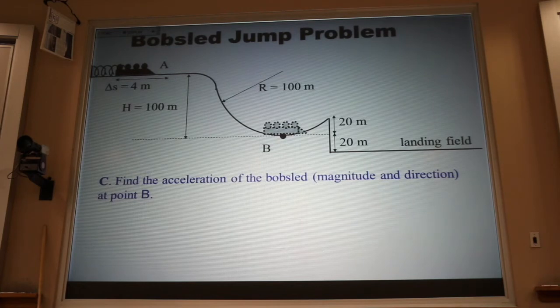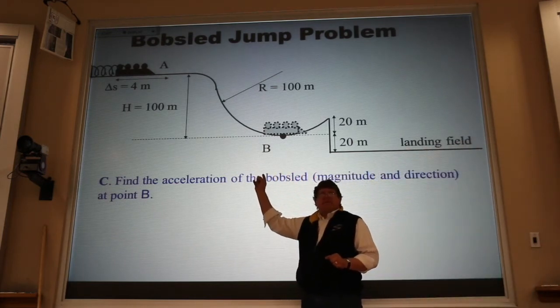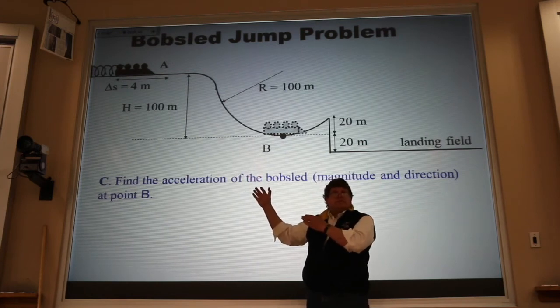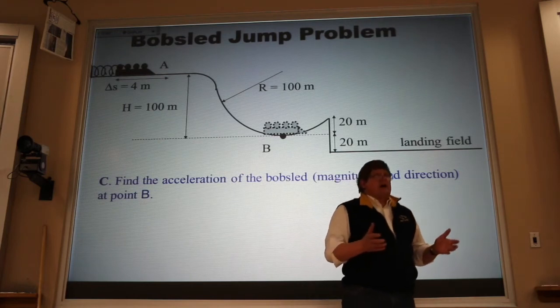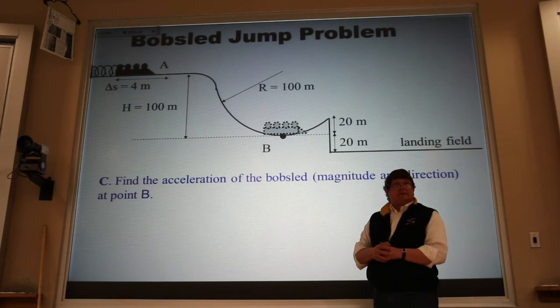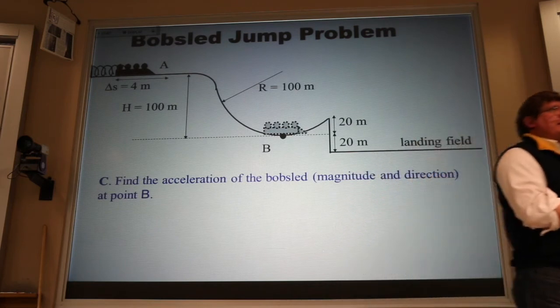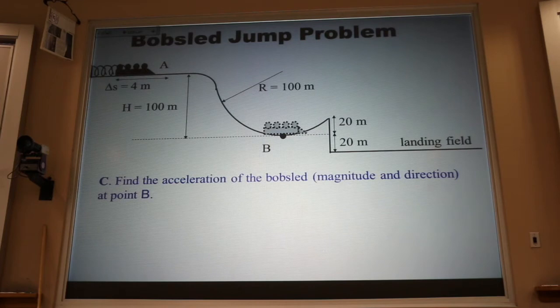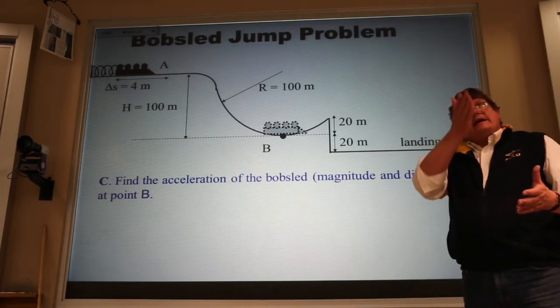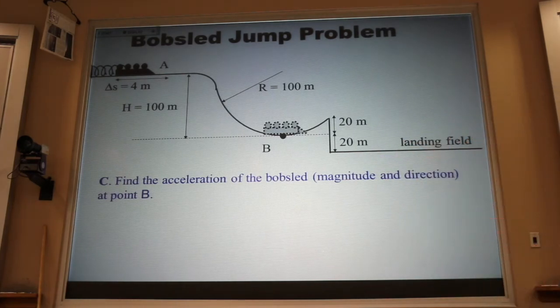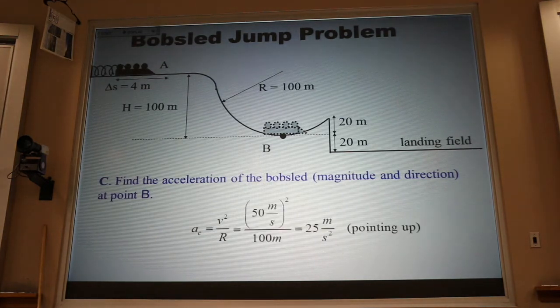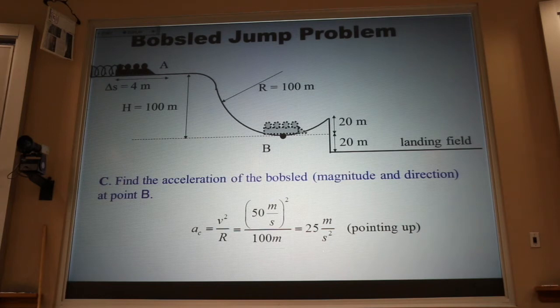We're asked to find the acceleration of the bobsled at point B. Now, at B, the bobsled is not speeding up. It has been speeding up, but not now. Not at B. At B, the bobsled is not slowing down. It will be slowing down in just a moment. But at B, it's in transition. It was speeding up, and it's about to slow down. That's the point where we take our foot off the gas and move it to the brake. At that point, the only kind of acceleration we have is turning. And it's in a circular path, and so that's going to be centripetal acceleration, V squared over R. The V is given as 50 meters per second. The radius is given as 100 meters. That gives me an acceleration of 25 meters per second per second.